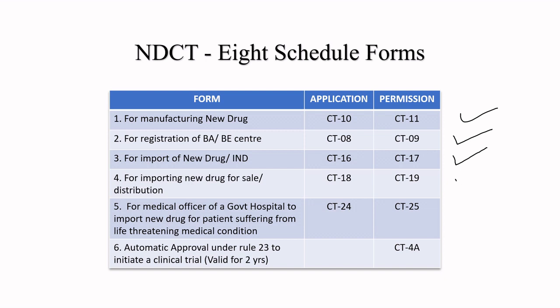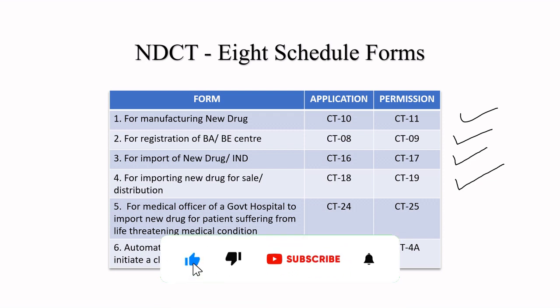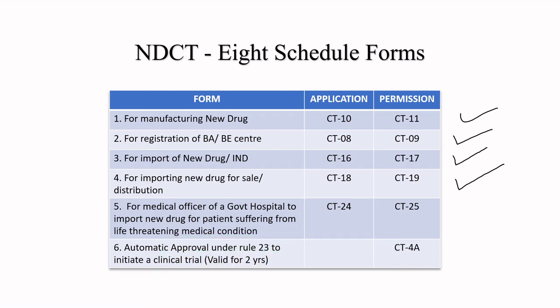If you want to import a drug for the purpose of sale and distribution, that goes through Form CT18 and approval through Form CT19. For patients with rare or life-threatening medical conditions, a medical officer from a government hospital can apply for permission to import that particular drug using Form CT25, and the approval is given in Forms CT24 and CT25.